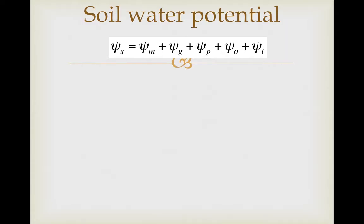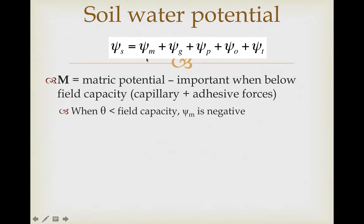You saw an equation like this when we were talking about plant water potential. Total soil water potential ψs is the sum of its components. ψ sub m is the matric potential — our tension or suction forces. The matric potential is important when the soils are below field capacity, when all of the water is being held in place by capillary and adhesive forces. When the water content is less than field capacity, the matric potential is going to be negative. When the water content is at or above field capacity, the matric potential is going to be zero.